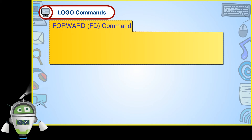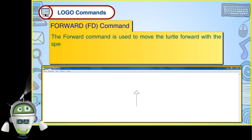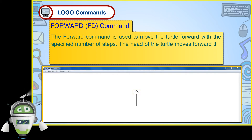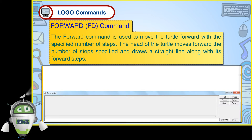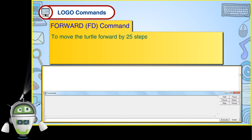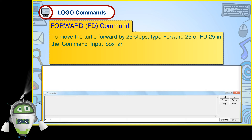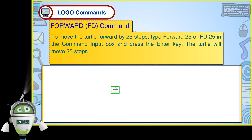Logo Commands — Forward FD Command. The forward command is used to move the turtle forward with the specified number of steps. The head of the turtle moves forward the number of steps specified and draws a straight line along its forward steps. To move the turtle forward by 25 steps, type forward 25 or FD 25 in the command input box and press the enter key. The turtle will move 25 steps forward.